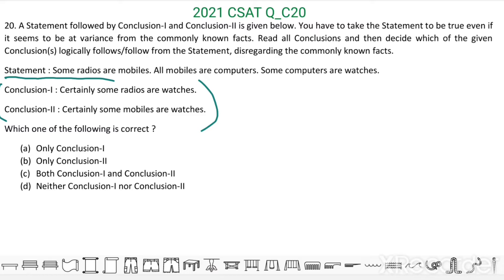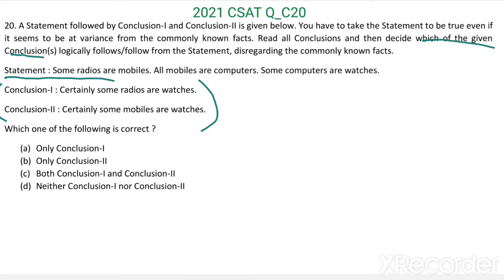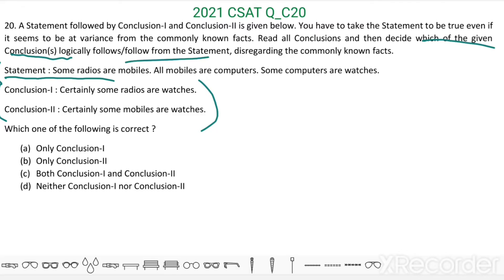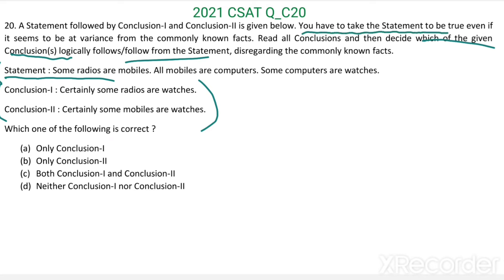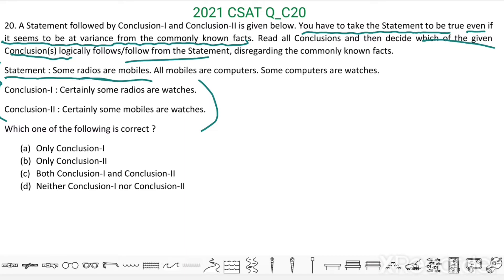We have to find which of the following given conclusions are logically following the given statement. You have to take the statement to be true even if it seems to be at variance from commonly known facts. That means even if you think the given statements are not possible, you have to take them as true. This kind of problem we can solve by drawing Venn diagrams.